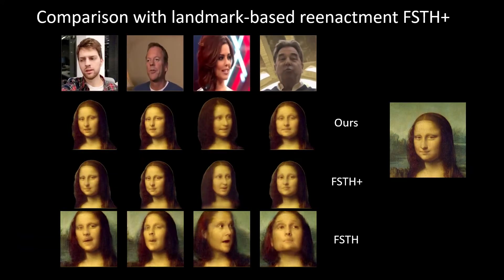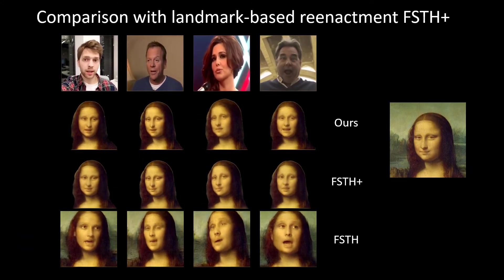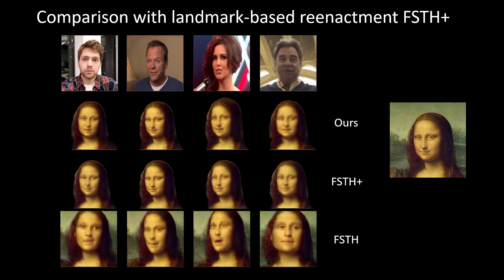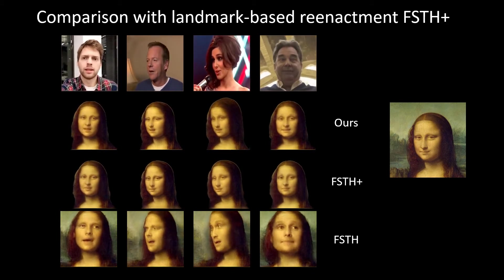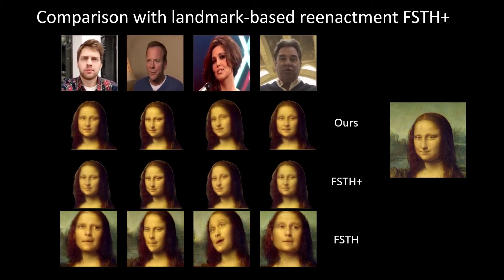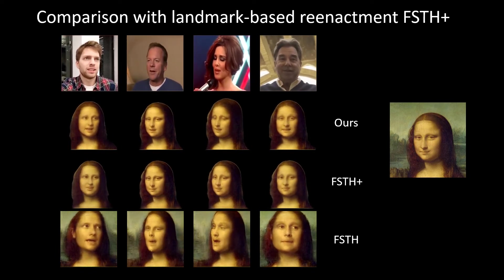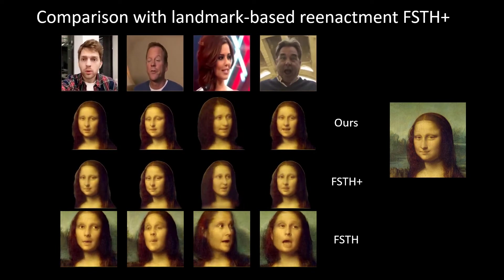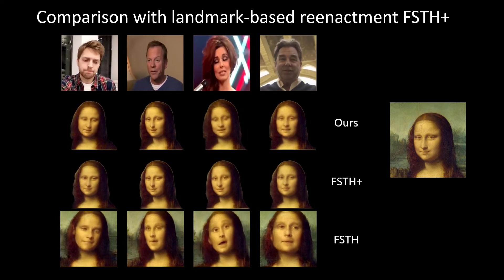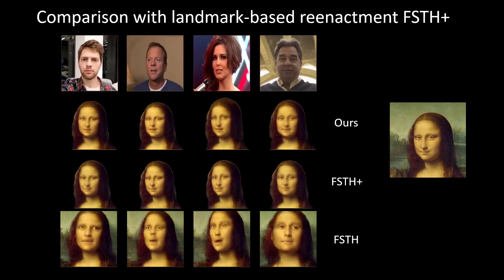Here we compare our reenactment system to the highly related Zakharov et al. system that is based on keypoints. We see that our pose descriptors transfer much less person-specific information and produce less shaky animation. Smoothing landmarks would remove shakiness from the baseline results, but would affect the fidelity of the mimics.